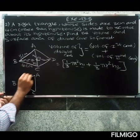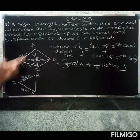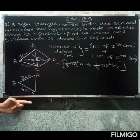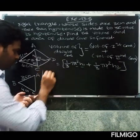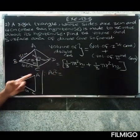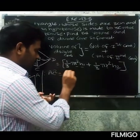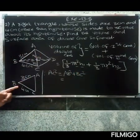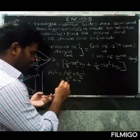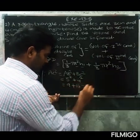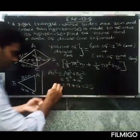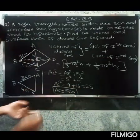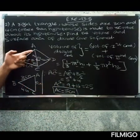AB is 3 centimeters and BC is 4 centimeters. Now finding AC using Pythagoras theorem on the right triangle: AC squared equals AB squared plus BC squared. So AC squared equals 3 squared plus 4 squared, which is 9 plus 16, equal to 25. Therefore AC equals root of 25, which is 5 centimeters. So h1 plus h2 equals 5 centimeters.